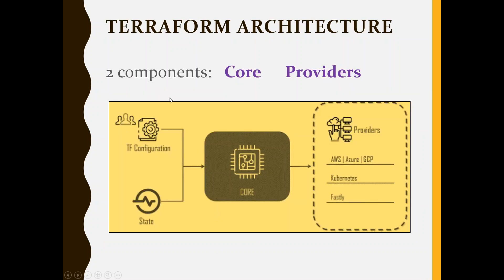Coming to the architecture, Terraform has got two components: one is core and the other one is provider. Let's talk about the Terraform architecture, which is very simple and helps us understand the functionality of Terraform. Core, as the name says, is the main component of Terraform — the actual crux lies in the core component.